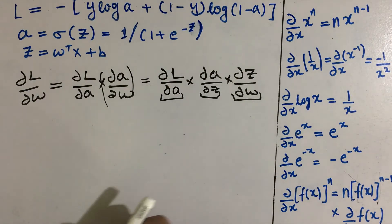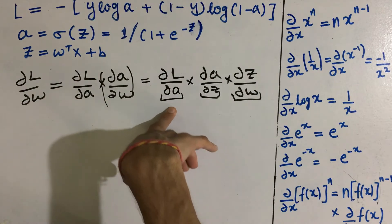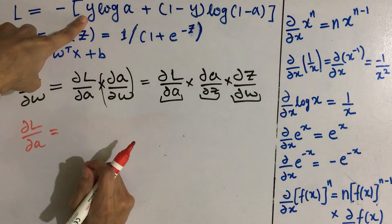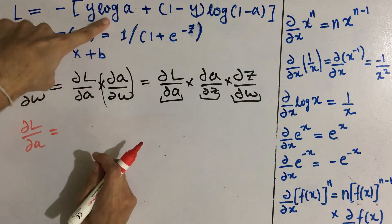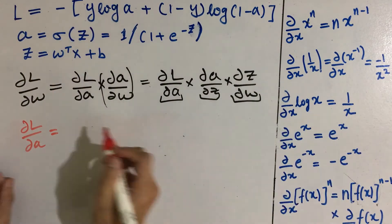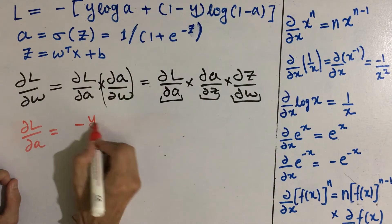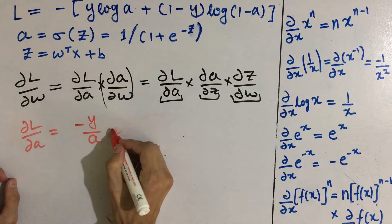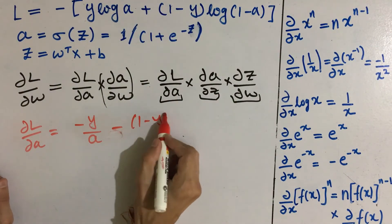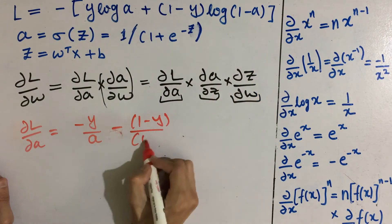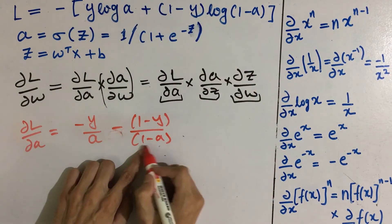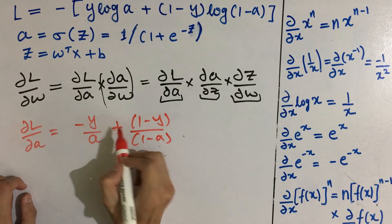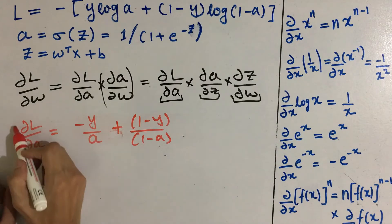Let's find del l by del a first. Here y are our actual labels and thus are constant. The derivative of log of x is 1 by x, so the first term gives minus y upon a. For the second term, it will be minus of 1 minus y upon 1 minus a, and the derivative of 1 minus a is minus 1, which cancels the negative, giving a plus sign. So we get our del l by del a.